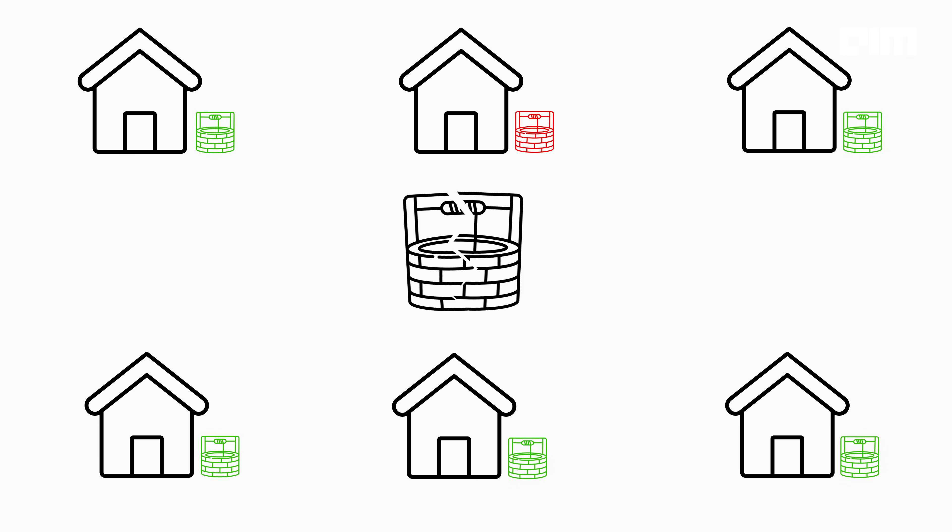Think of it like a neighborhood water supply. Instead of relying on one big water tank that could break and leave everyone high and dry, if every house had its own well — if one well fails, you can just pop next door for a drink.